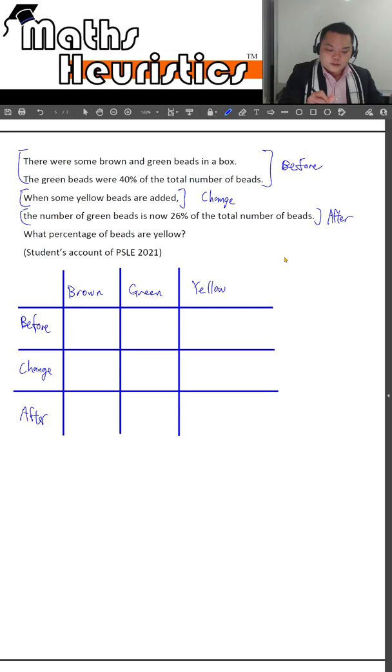What can we do first? We can reduce this 40% of the total number of beads at first down into a fraction of simplest form, and then we can allocate the units here. So the 5 goes to the total number of beads, 2 goes to the number of green beads.